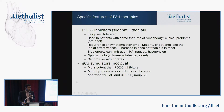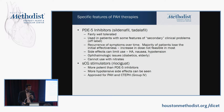PDE5 inhibitors work on the nitric oxide pathway and can be used in early disease. Later in the disease, as nitric oxide production goes down, PDE5 inhibitors become less helpful because they are NO-dependent. That's where sGC stimulators come in — they are NO-independent and have been approved for both PAH and chronic thromboembolic pulmonary hypertension.